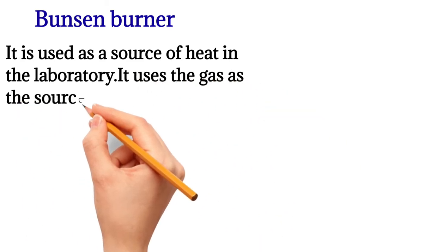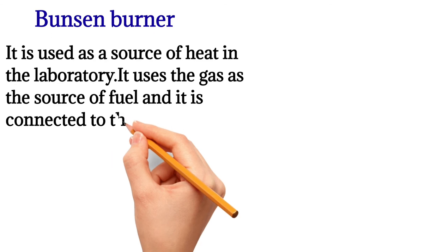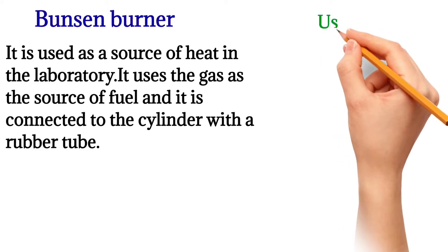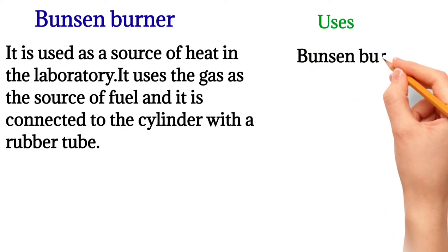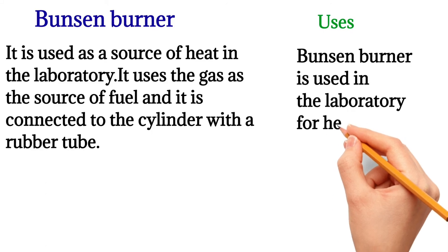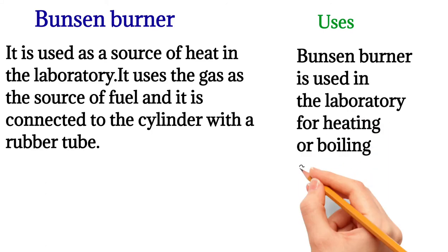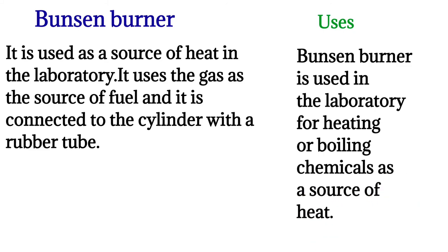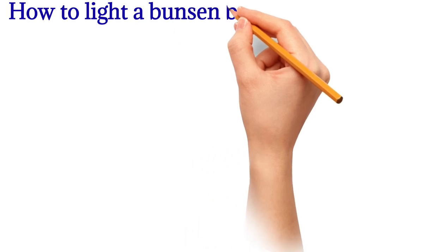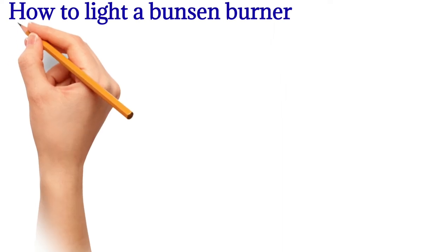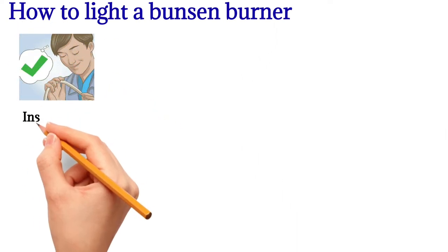Next we move on to the Bunsen burner. It is used as a source of heat in the laboratory. It uses gas as the source of fuel and is connected to the cylinder with a rubber tube. The Bunsen burner is used in the laboratory for heating or boiling chemicals.